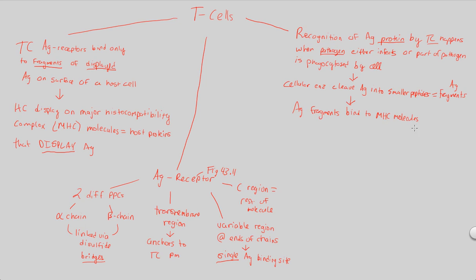The antigen fragments bind to MHC molecules found within the cell. Every cell has the capability of making MHC molecules because every cell needs to be able to show immune cells that something is infecting it. So we bind the antigen fragment — the thing we want to display — to the displaying tool known as an MHC molecule. But right now we're within the cell, which is no good. The T-cell can only read what's happening on the surface of a host cell.